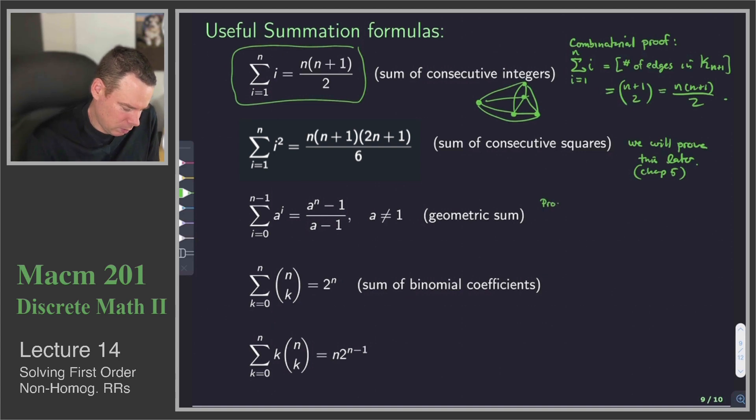How about the geometric sum? Well, the geometric sum, how do we prove that? Well, we can say let S be that sum. So it's 1 plus a plus a squared plus dot dot dot all the way up to, in this case, it's a to the power of n minus 1. And then what I'll do is I will multiply that by a and subtract it off again. What's left over? Well, if I multiply through by a, then what I basically get is a plus a squared plus dot dot dot all the way up to a to the n.